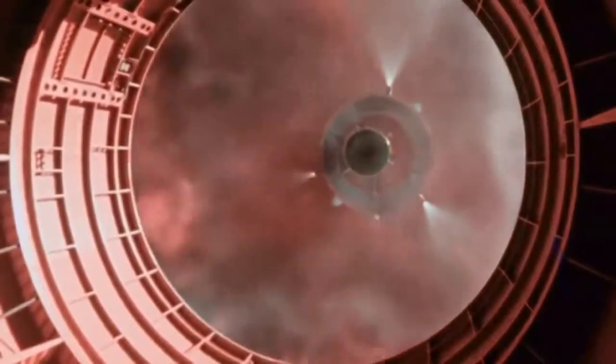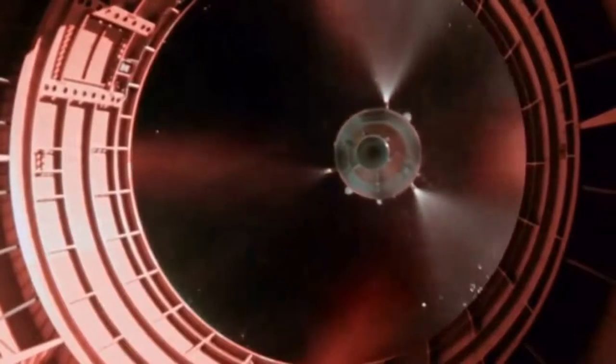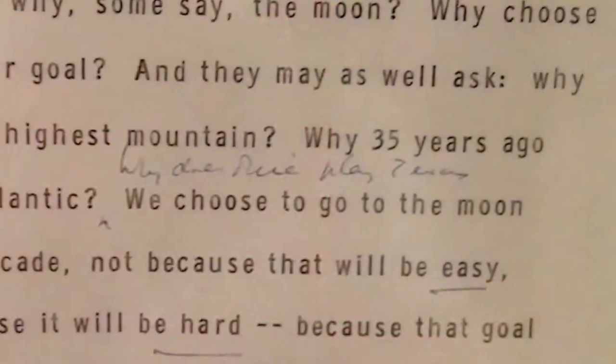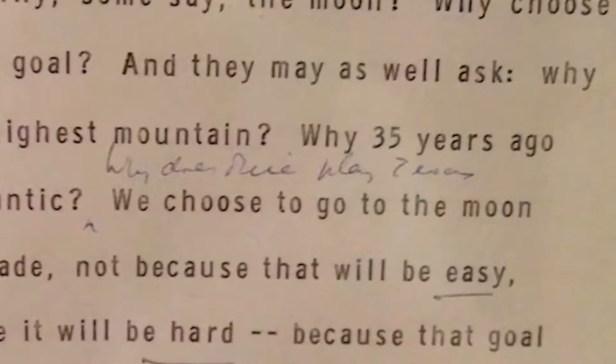That was not always the case. In NASA's early years, it seemed like many of its projects were stuck in fast forward. None more so than the Apollo program. President Kennedy made his famous Man on the Moon speech at Rice University in 1962, and by July of 1969, Neil Armstrong was stepping out of the lander onto the surface of the moon.